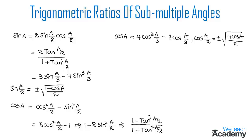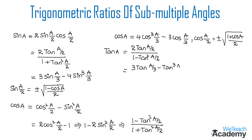Now let us proceed and discuss the next trigonometric ratio, which is tan A. So tan A will be equal to 2 tan(A/2) divided by 1 minus tan squared(A/2). And for the fraction 1/3, we get the formula for tan A as 3 tan(A/3) minus tan cubed(A/3) divided by 1 minus 3 tan squared(A/3).